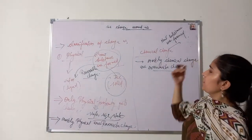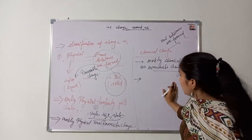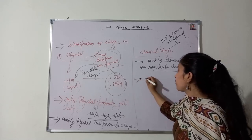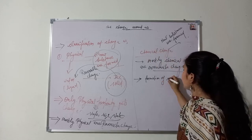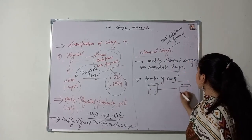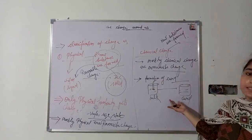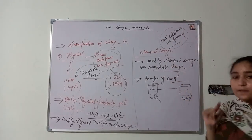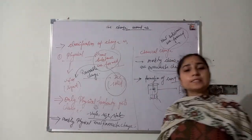The example of chemical change is the formation of curd. When milk gets converted into curd after adding some curd, this is a chemical change because new substance — curd — is formed. And this is also an irreversible change because curd cannot be converted back into milk. So this is chemical change.